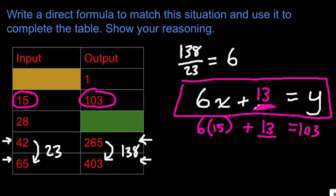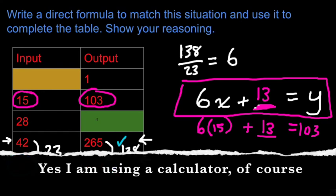Again, if I'm not sure, I can always double check with any other position. 6 times 65 is 390. Plus 13 is 403. Works with this one. 6 times 42 is 252. Plus 13 is 265. Works with this one. I can use it to find my green answer. 6 times 28 plus 13 equals 181.